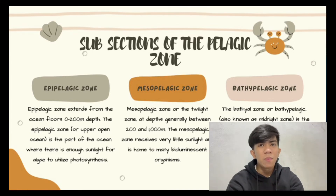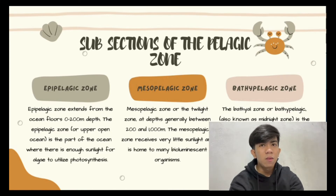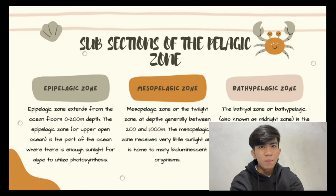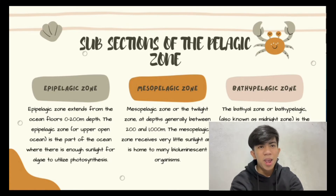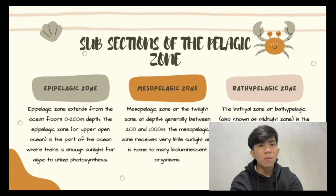The third one is bathypelagic, from 1,000 meters to around 4,000 meters. By this depth, the ocean is almost entirely dark, with only the occasional bioluminescent organism. There are no living plants, and most animals survive by consuming the snow of detritus falling from the zones above, or like the marine hatchetfish, by preying upon others. Giant squid live at this depth, and here they are hunted by large sperm whales.